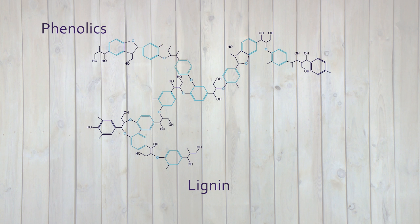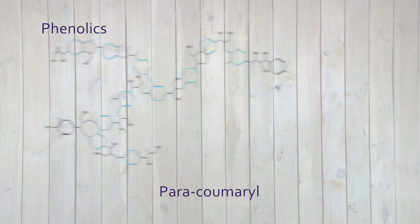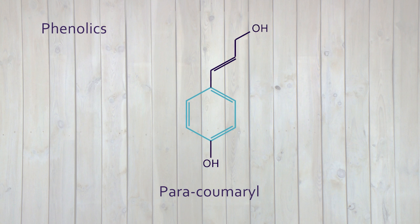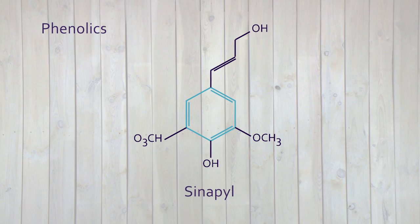The last phenolic compound we will discuss is lignin, one of the main components of the cell wall. Lignin is built up mainly of three molecules: paracoumaryl alcohol, coniferyl alcohol and sinapyl alcohol.